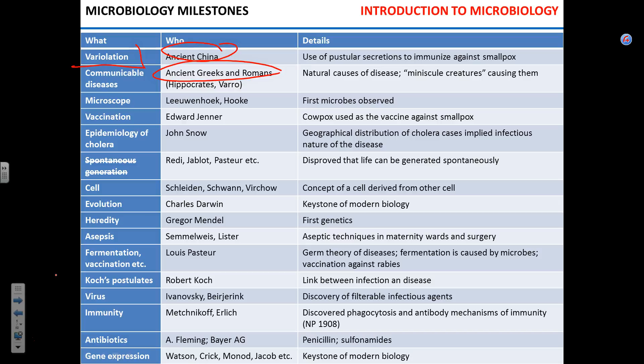Pasteur did a definitive experiment. He took flasks with swan-neck-shaped necks — any airborne contaminants would be trapped in the curve. He made broth, boiled it, then broke the neck of one flask. About a week later, the flask with the broken neck showed growth; the intact flask did not. You can still see that intact flask — sterile after more than 100 years — in the Pasteur Museum in Paris. That was the last argument against spontaneous generation.